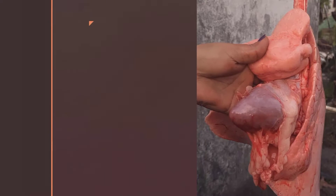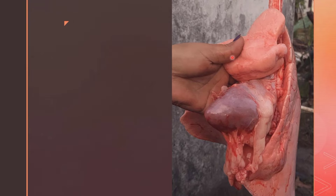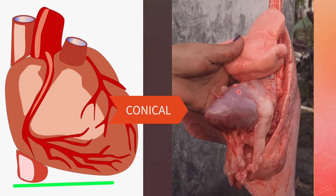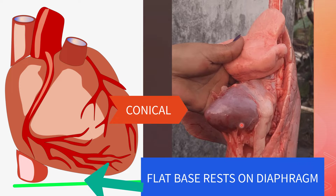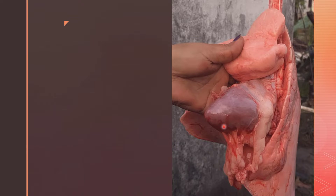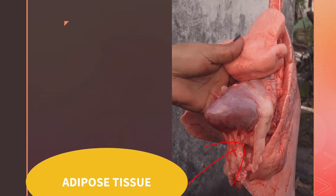This again is a heart, which looks precisely conical. But in the human heart, the base or posterior surface is flat, as we stand upright and it needs to rest on the diaphragm. Those white structures attached to the heart, if you look carefully, are fatty tissues called adipose tissue.